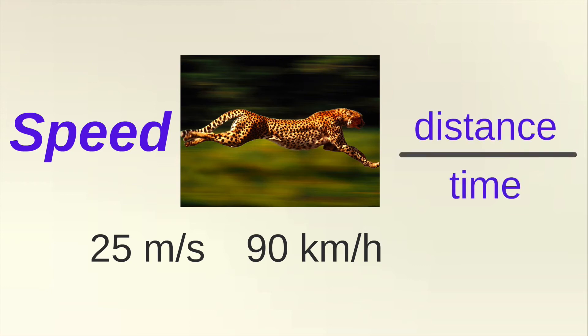Take a look at speed. Notice the units within units, as we talk about how a cheetah can run 25 meters per second, or 90 kilometers per hour. In both these cases, you'll notice a unit of distance per a unit of time.